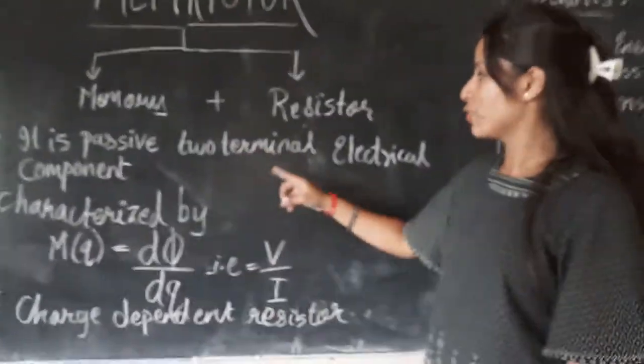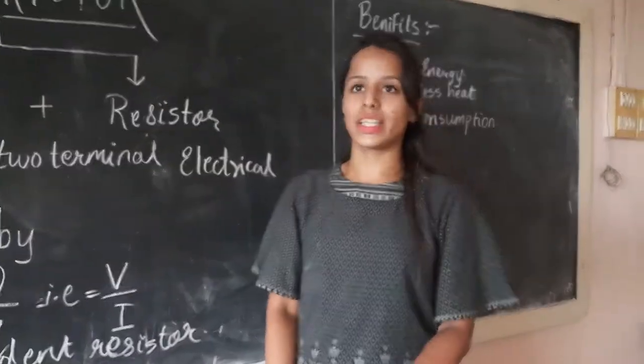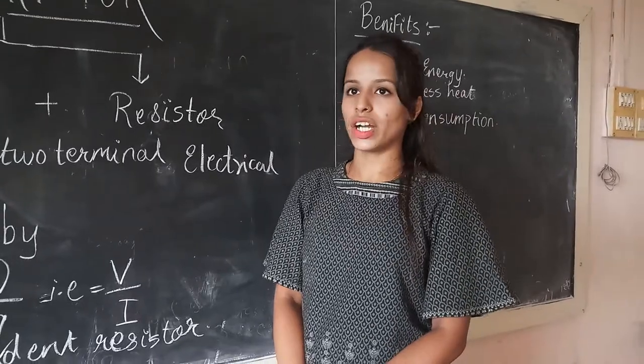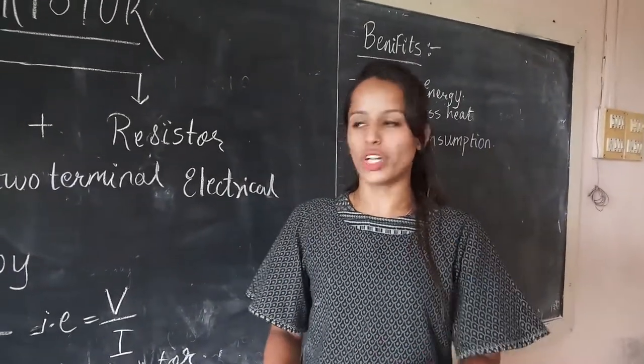It is a passive two-terminal electrical component. The exact definition of memristor is: a memristor is a semiconductor whose resistance varies as a function of current and voltage.